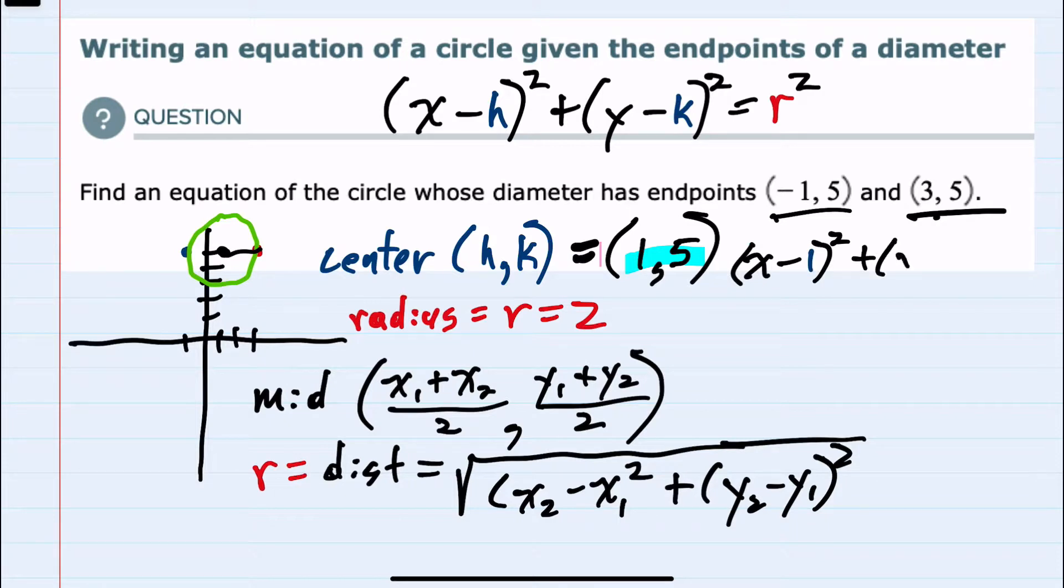plus y minus k, which here is 5 squared, equals the radius, which here is 2 squared.